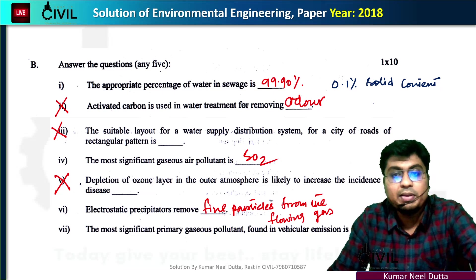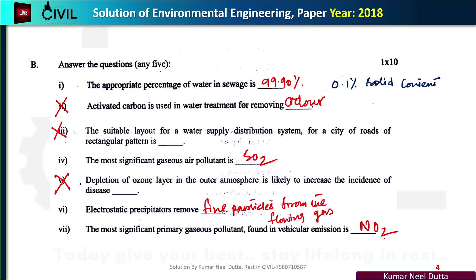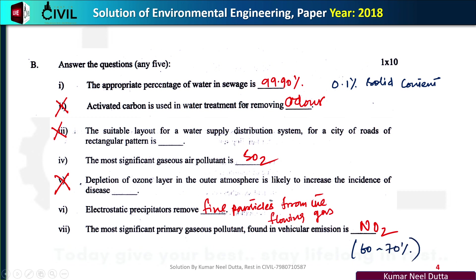The most significant primary gaseous pollutant in vehicular emission is nitrogen dioxide (NO2). This accounts for approximately 60 to 70 percent, making it the most significant vehicular emission pollutant.